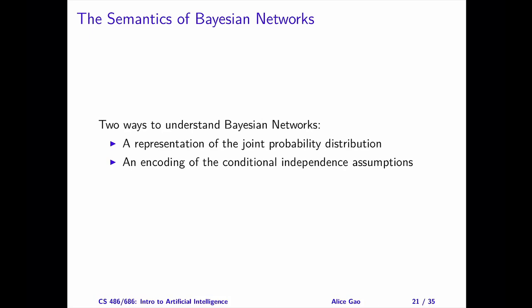There are two ways to interpret a Bayesian network. First, a Bayesian network represents a joint probability distribution.